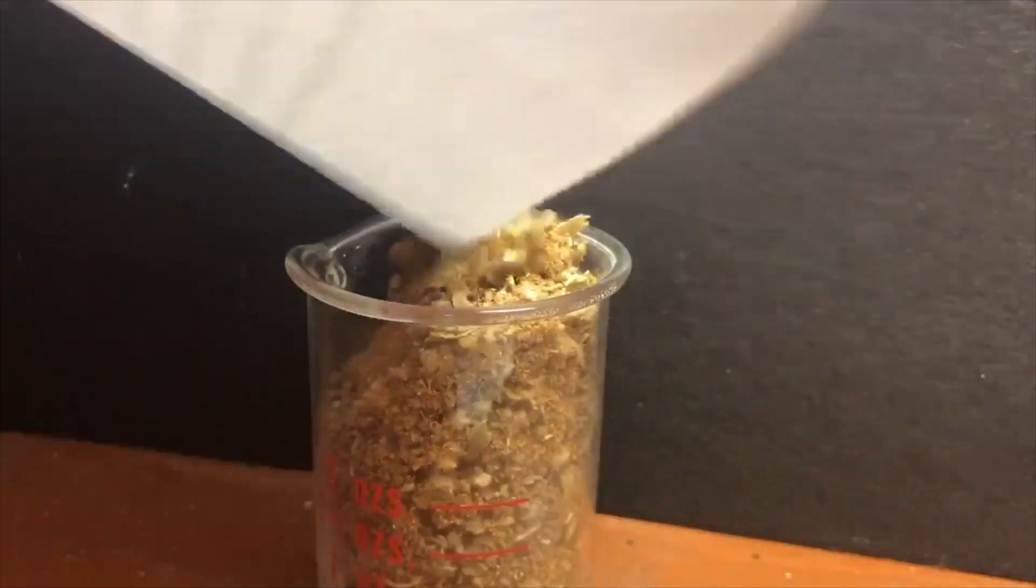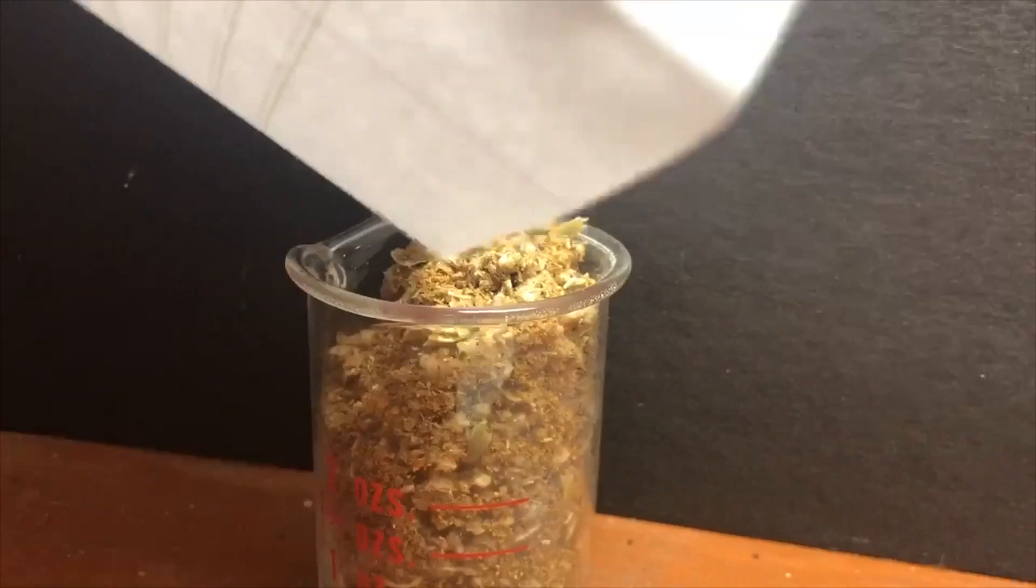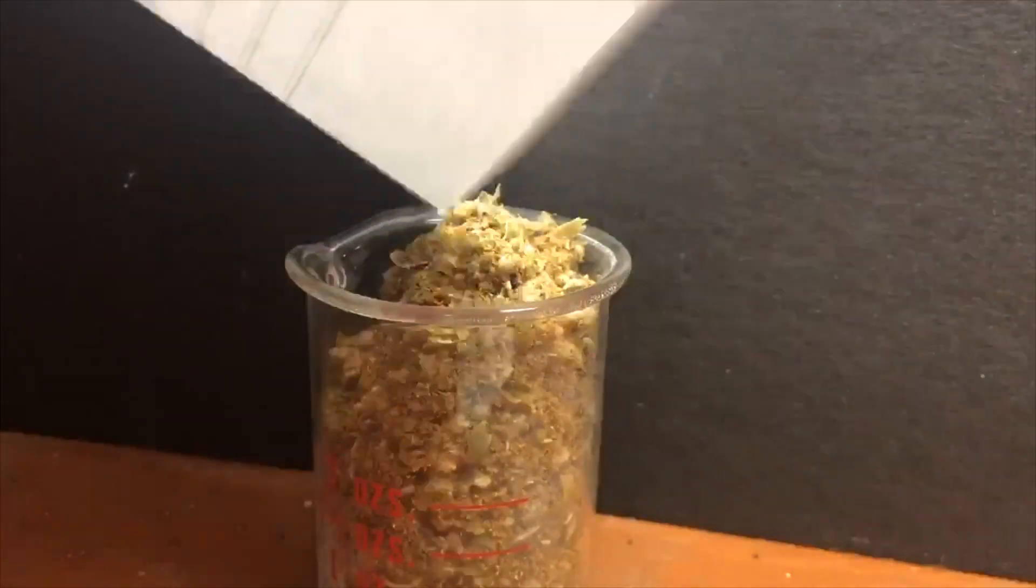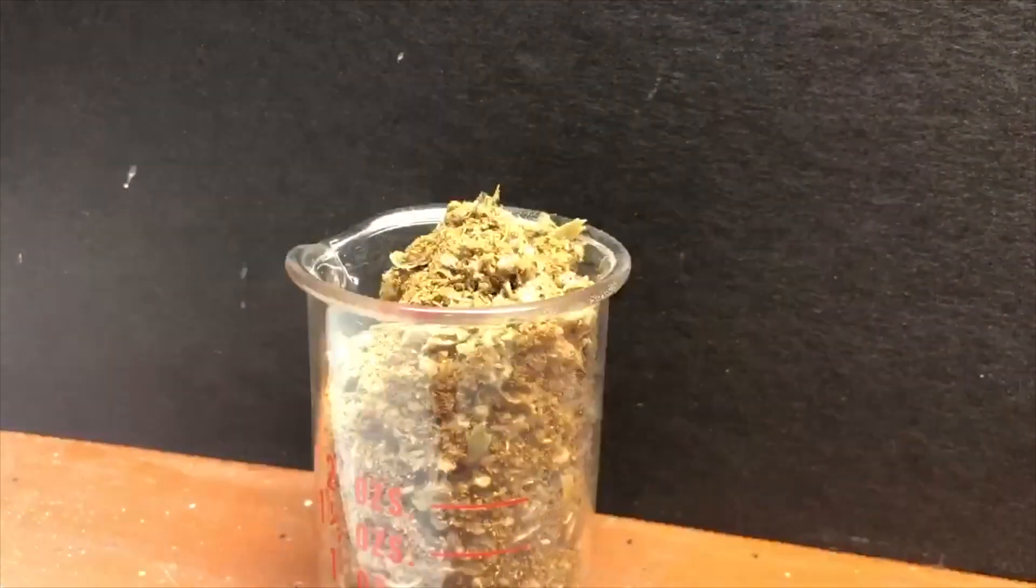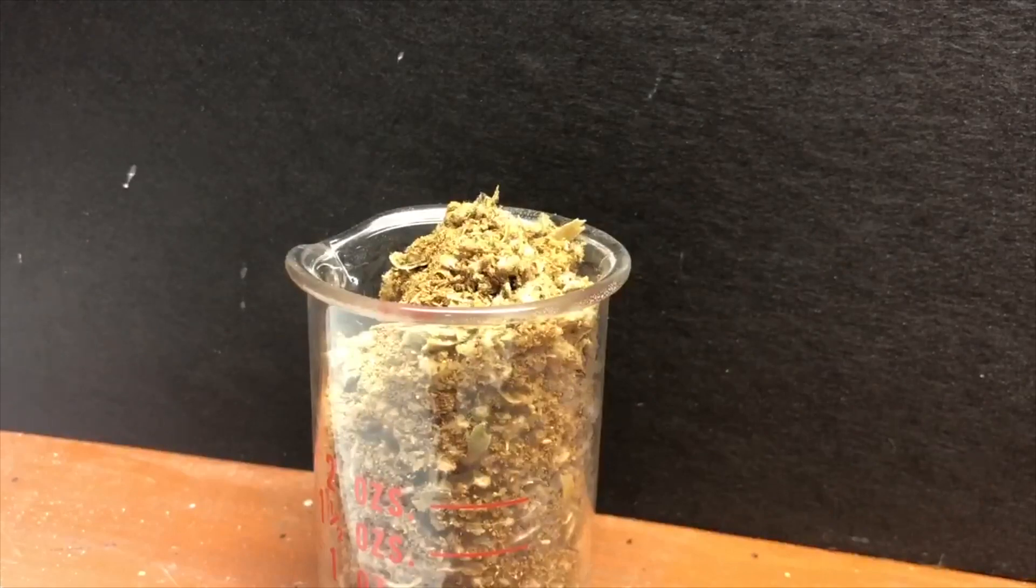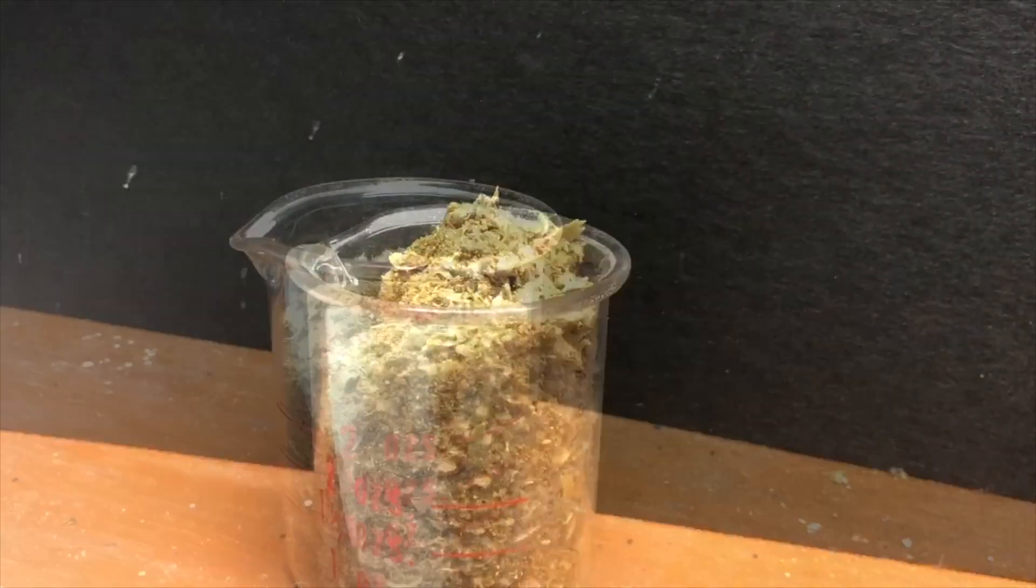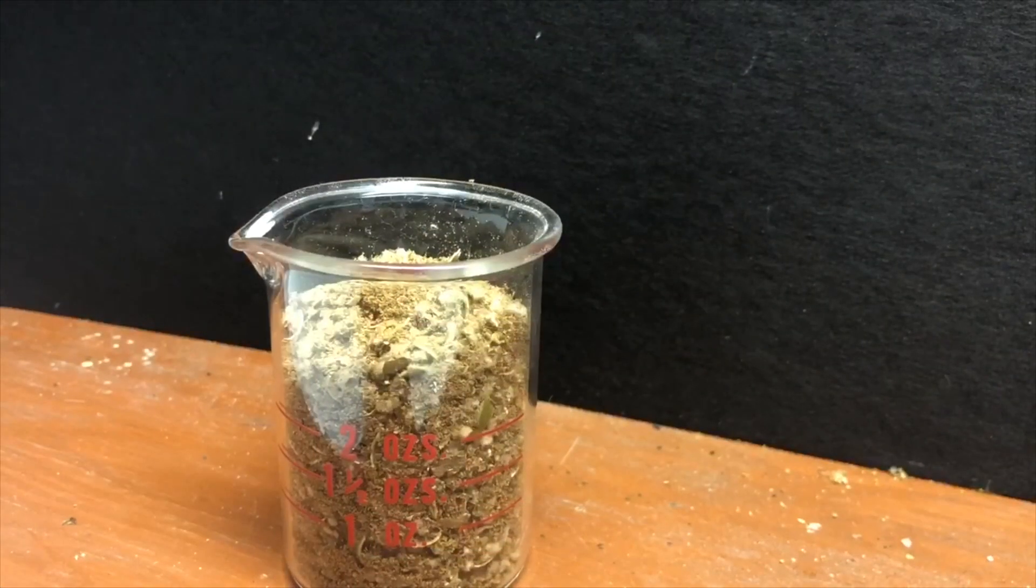So what we're going to do here is add up all the ground up acorns into a beaker, and we're gonna top it off with methanol, and this should extract all the tannins. The tannins are water soluble and alcohol soluble and soluble in most other polar solvents, so you could pretty much use anything. I'm just using methanol in this video.